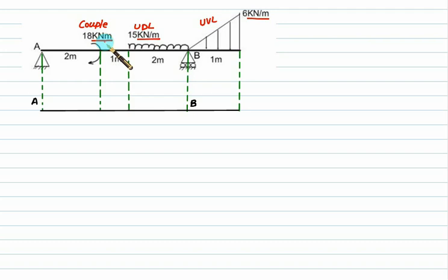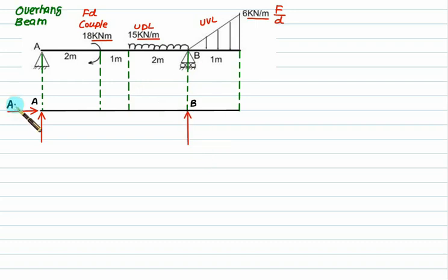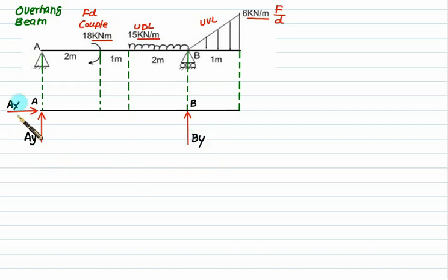UDL and UVL must be multiplied by meters to convert to force. The couple is already in the quantity force multiplied by distance. At the fixed support, show two reactions; at the roller support, show one reaction. The horizontal reaction is labeled Ax, the vertical reaction is Ay, and the roller reaction is vertical, so it is By. The couple load you show as it is, and you convert UDL and UVL into point loads.